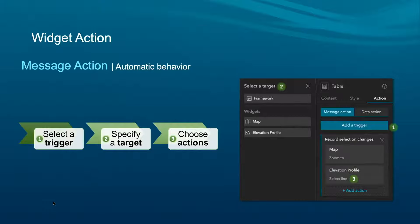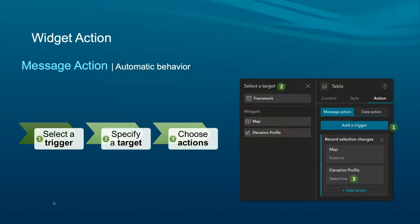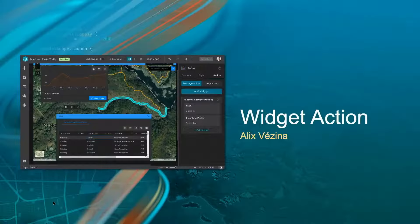Another action type is called message action. Message actions are set by app creators in the background. For example, when a feature is selected in a table, the map automatically zooms to that feature. This consists of three parts: a trigger broadcasts a message saying a feature has been selected; targets listen to the message, like a map saying a feature has been selected in the table; and the map acts on it. Let's see Alex's demo about actions.